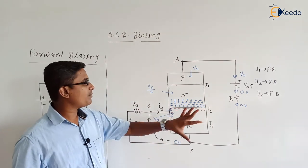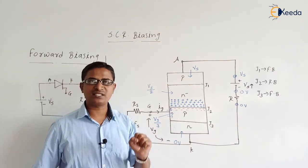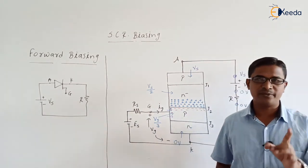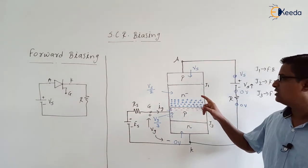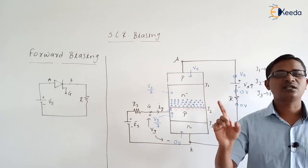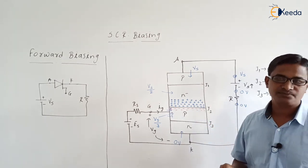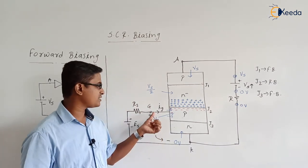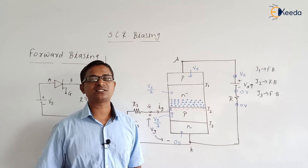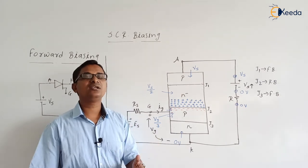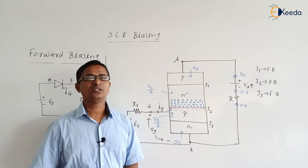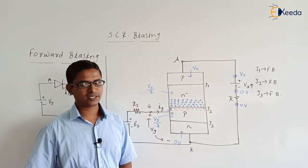This is about the forward biasing of the silicon controlled rectifier. When SCR is in forward bias mode, junctions J1 and J3 are in forward bias and junction J2 is in reverse bias. As soon as gate current starts circulating, the width of the depletion layer across reverse-biased junction J2 goes on decreasing. In the next video, we will discuss the reverse biasing of the SCR. Thank you.